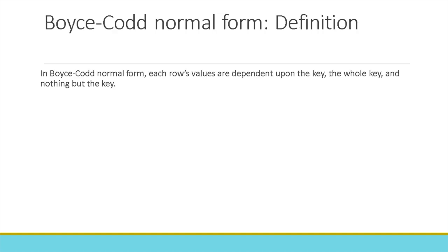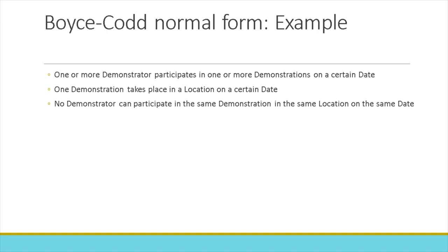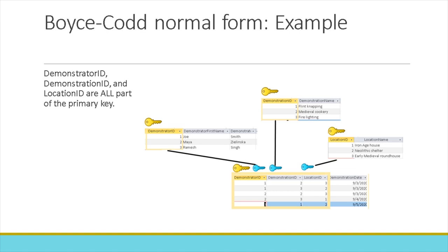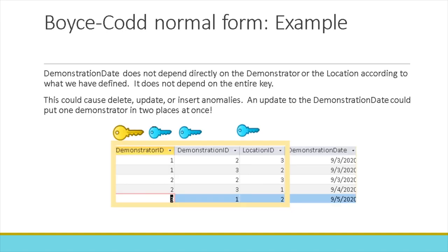For example, if we have one or more demonstrators that participate in one or more demonstrations on a certain date, one demonstration can take place in a location on a certain date, but no demonstrator can participate in the same demonstration in the same location on the same date. The tables here attempt to solve the problem by recording demonstrator ID, demonstration ID, location ID, and date in one table. Demonstrator ID, demonstration ID, and location ID are all part of the primary key. However, demonstration date does not depend directly on the demonstrator or the location — it does not depend upon the entire key — and this could cause delete, update, or insert anomalies. An update to the demonstration date could put one demonstrator in two places at once.